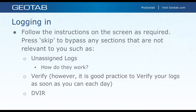After handling unassigned logs and verifying, the last step is your DVIR. You'll be prompted to do a DVIR for your vehicle and trailer. These DVIRs are completely customizable — you can create your own checklist of what drivers should inspect. Drivers go through the list, identify any defects, and move on. Keep in mind that doing a DVIR within the workflow will automatically put you in on-duty status.